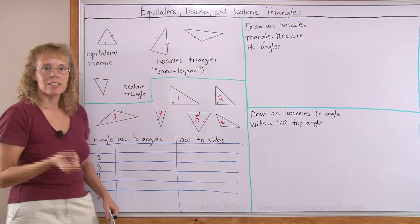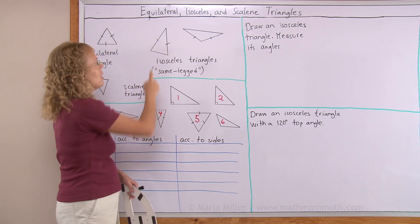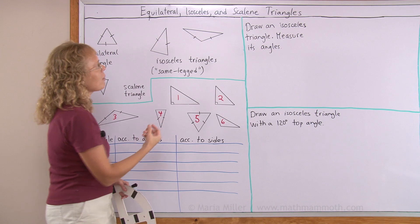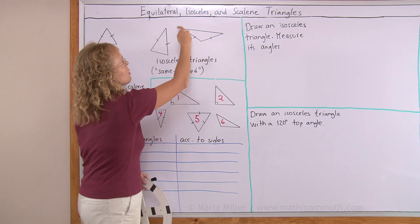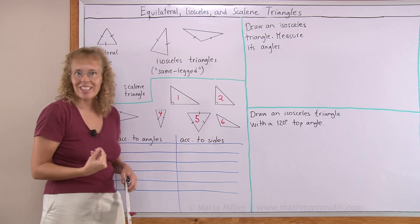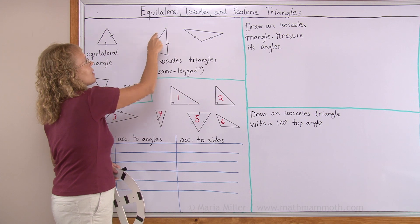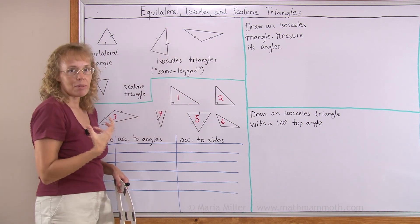Isosceles triangle has two congruent sides. This and this side are congruent, the same length. The third side might not be. I think of it as a same legged triangle, because you can think of somebody standing and his legs here, a person's legs, this leg and this leg being of the same length.